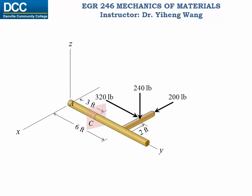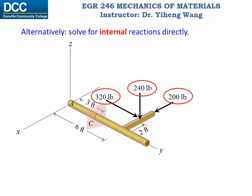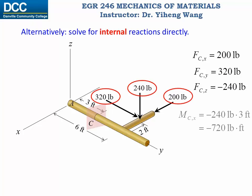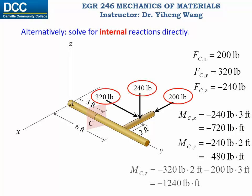After you have become familiar with the procedure for determining internal reactions, there is an alternative way for an easier analysis that combines the previous two steps. At point C, we replace the external loadings that we chop off — not only the forces, but also the moments these external loadings create about point C. These numbers are the same as determined through the previous two steps.